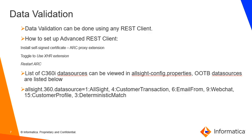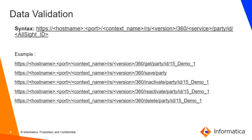A few of the C360 data sources can be viewed in the all-site config properties. A few of the out-of-the-box data sources are listed: one is all-site, four is customer transaction, six is email from, nine is web chat, 15 is customer profile, and three is deterministic match. The syntax for a GET call to view data in any REST client is shown on screen. You have to use HTTPS or HTTP followed by the hostname, the port, the context name, the version, the service name, followed by the party and the all-site ID. An example is displayed as well.